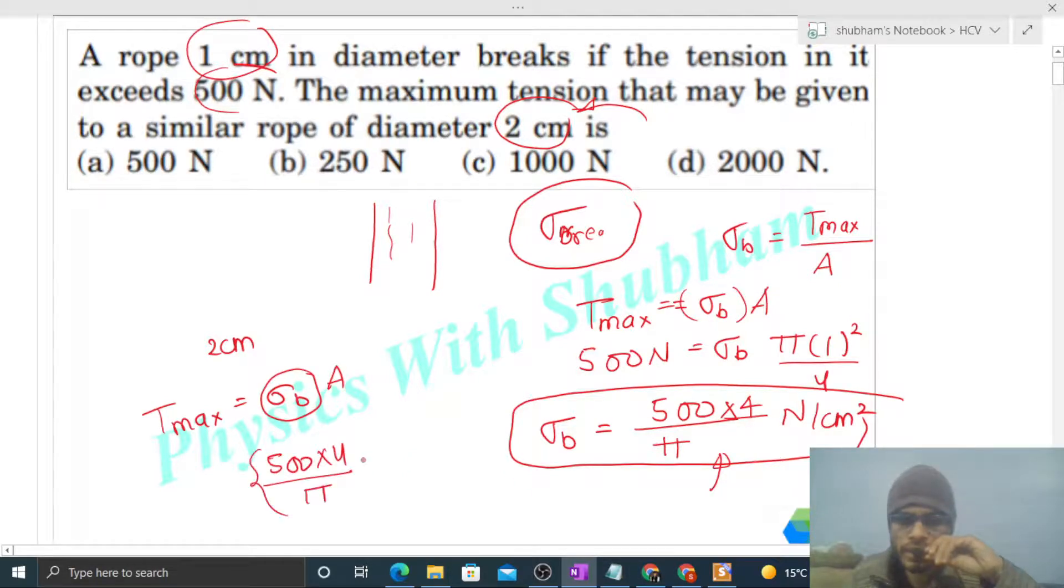...that is 500 times 4 divided by π, times cross-sectional area which is π d squared divided by 4 with diameter 2 centimeter. You can see that 4 and 4 cancel, π and π cancel, giving 500 times 4 which equals 2000 Newton.